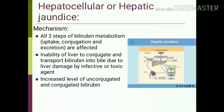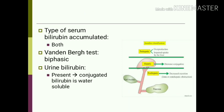In hepatocellular or hepatic jaundice, all three steps of bilirubin metabolism are affected: uptake, conjugation, and excretion of bilirubin. The liver has an inability to conjugate and transport bilirubin into the bile for excretion. The cause is liver damage due to infection or toxic substances, and there are increased levels of both unconjugated and conjugated bilirubin.